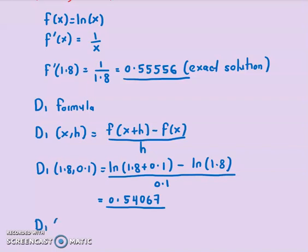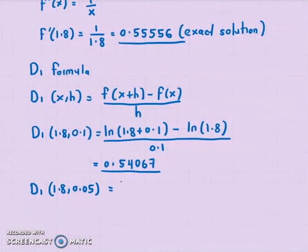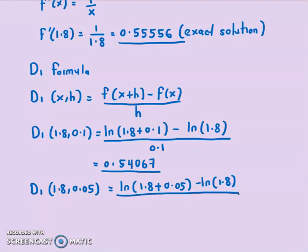Now for the other value, h = 0.05. We compute [ln(1.85) - ln(1.8)] / 0.05, which gives 0.54798. You can see that just by using D1 with different h values, the solution is approaching the exact solution, but it's not quite accurate.